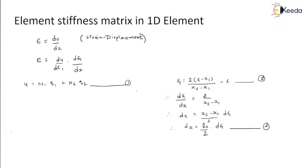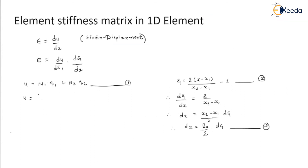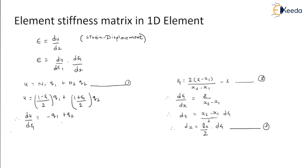Now for the shape function, we come back to the shape function equation. Instead of N1 we can write N1 equals 1 minus psi divided by 2, and for N2 it is 1 plus psi divided by 2. Putting these values in: N1 times q1 plus, instead of N2 we write (1 plus psi)/2 times q2. Now differentiating this displacement with respect to psi, we get minus u1 plus u2, divided by 2.